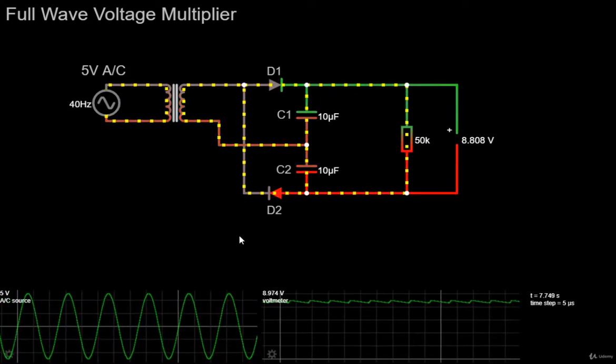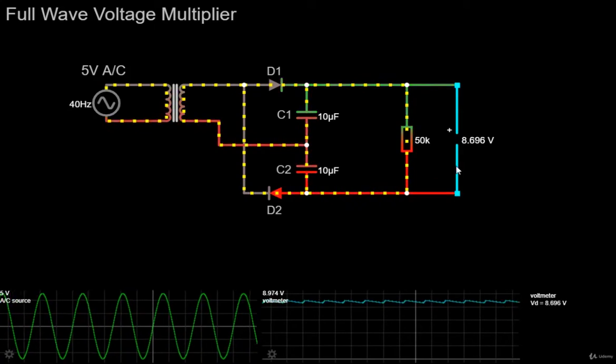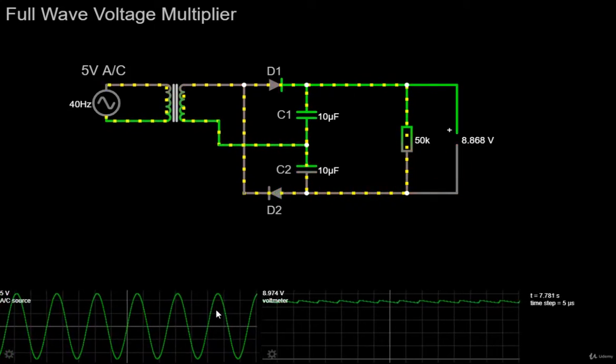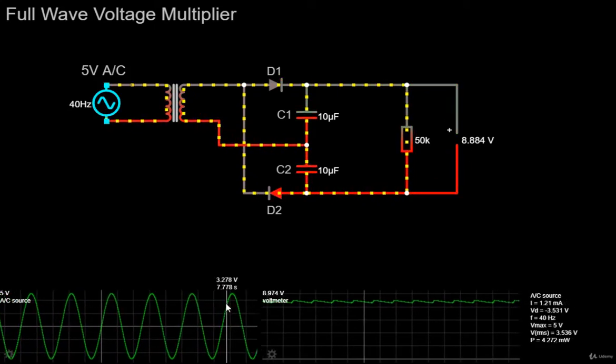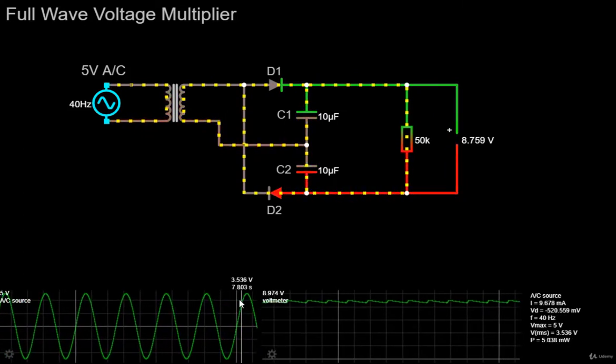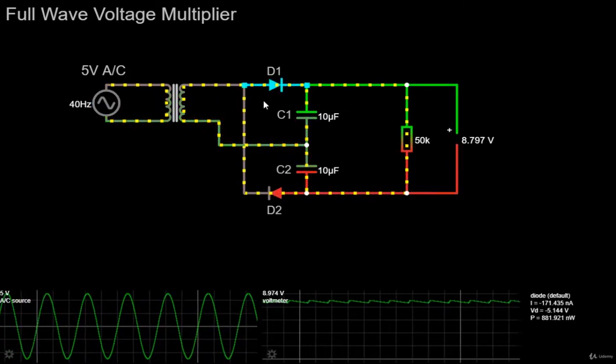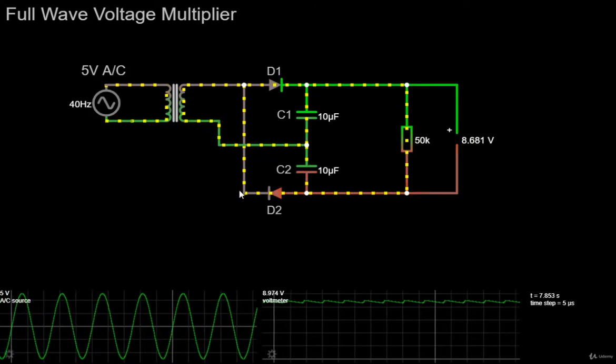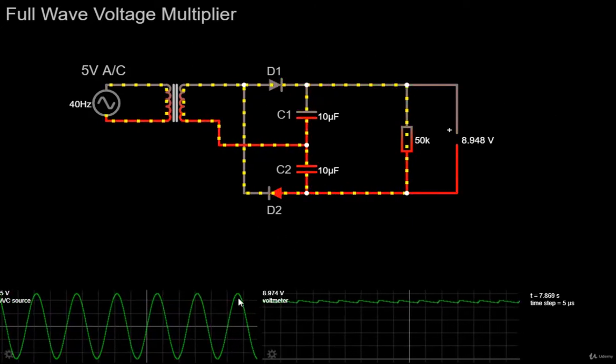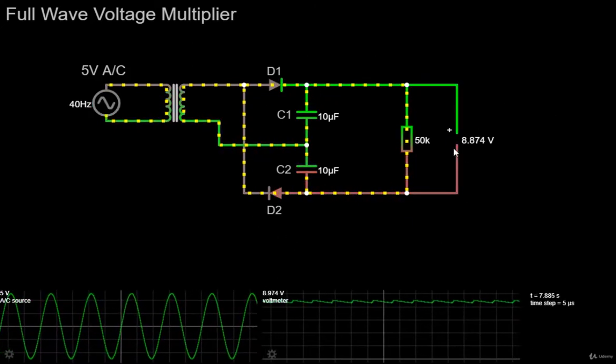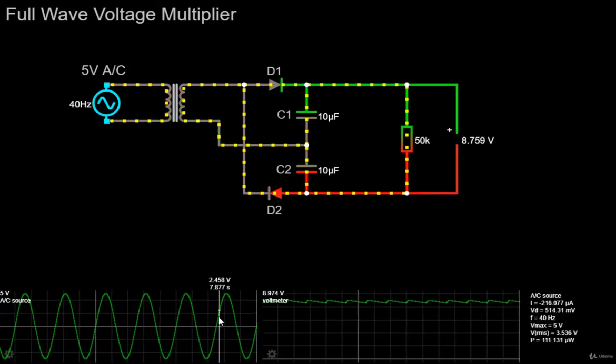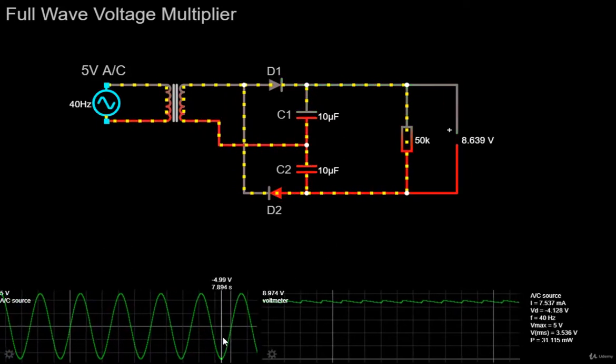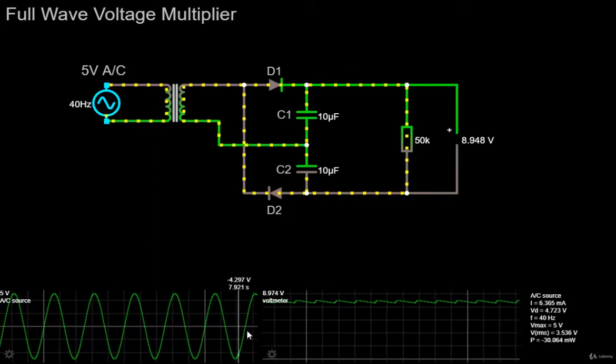Generally, the DC output voltage of a rectifier circuit is limited by the peak value of its sinusoidal input voltage. But by using combinations of rectifier diodes and capacitors together, we can effectively multiply this input peak voltage to give a DC output equal to some multiple of the peak voltage value of the AC input voltage.